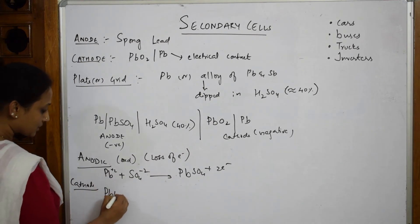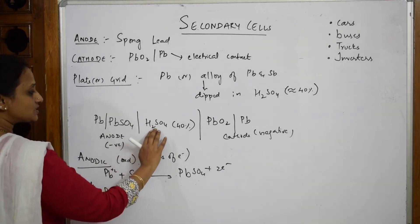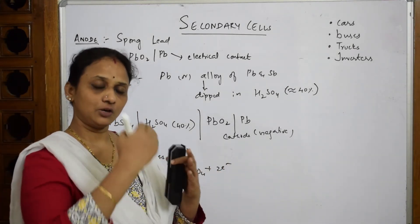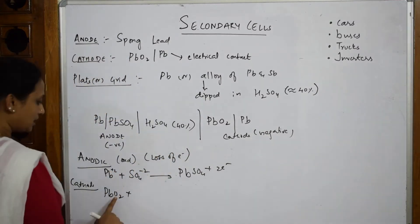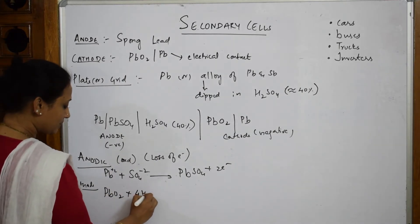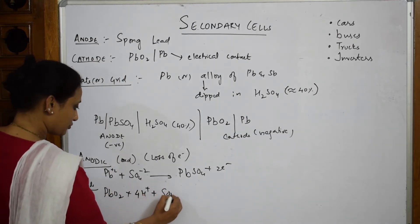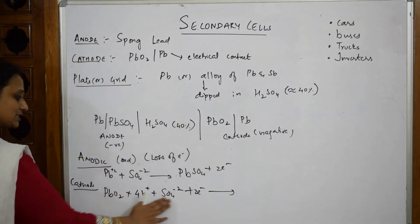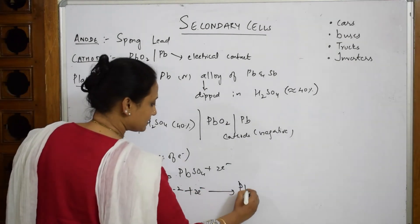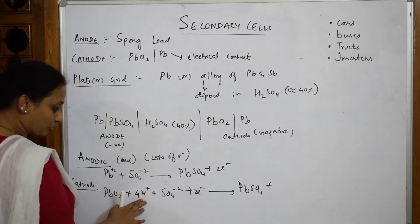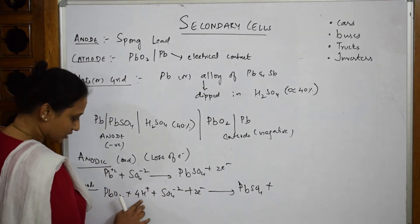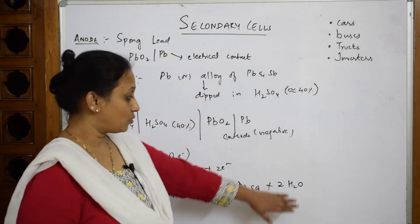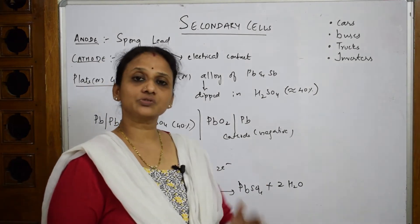For the cathodic reaction: PbO₂ reacts with 4H⁺ and SO₄²⁻, accepting the 2 electrons from the anode. This also forms lead sulfate (PbSO₄). The 4H⁺ and the oxygen from PbO₂ combine to give 2 water molecules: PbO₂ + 4H⁺ + SO₄²⁻ + 2e⁻ → PbSO₄ + 2H₂O.